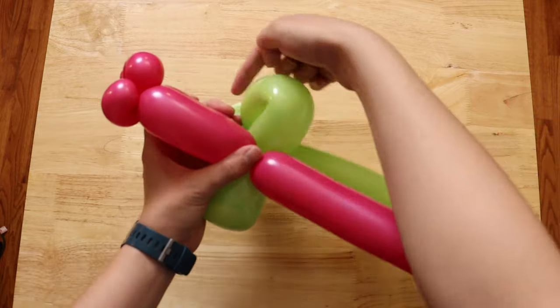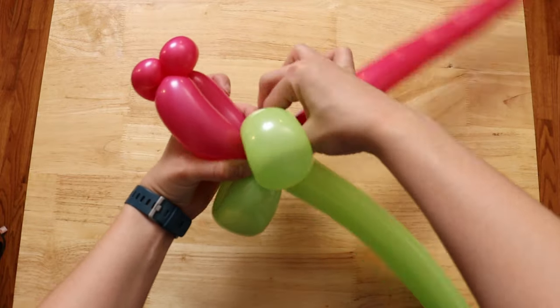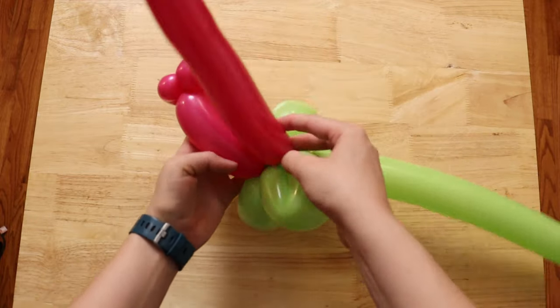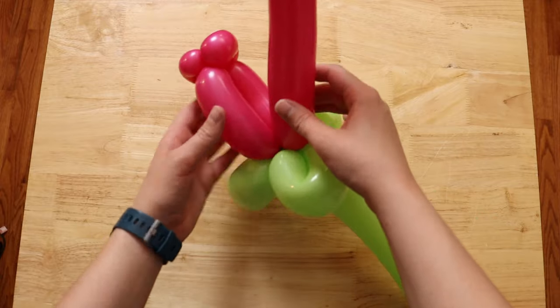And then we need to secure that twist into the arrangement. So I'm going to tuck it behind one of the leaves and bring the balloon back up before softening it and making another six-finger section.